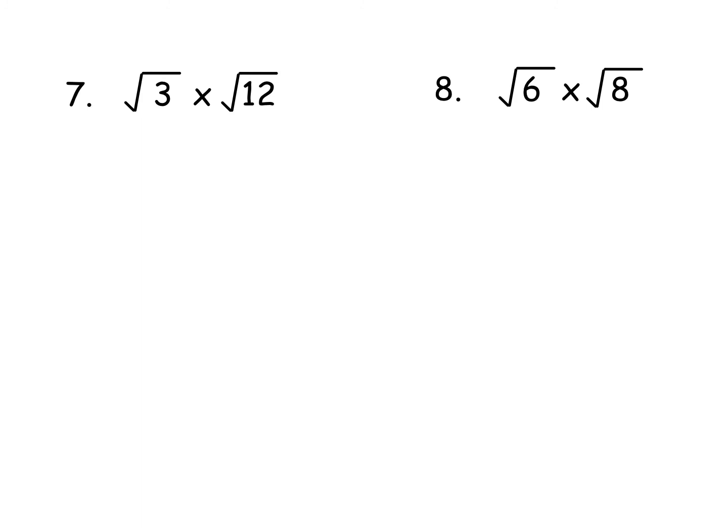So for the first one, square root of 3 times the square root of 12, you're doing 3 times 12 is 36, which gives you the square root of 36, which we should know is 6.